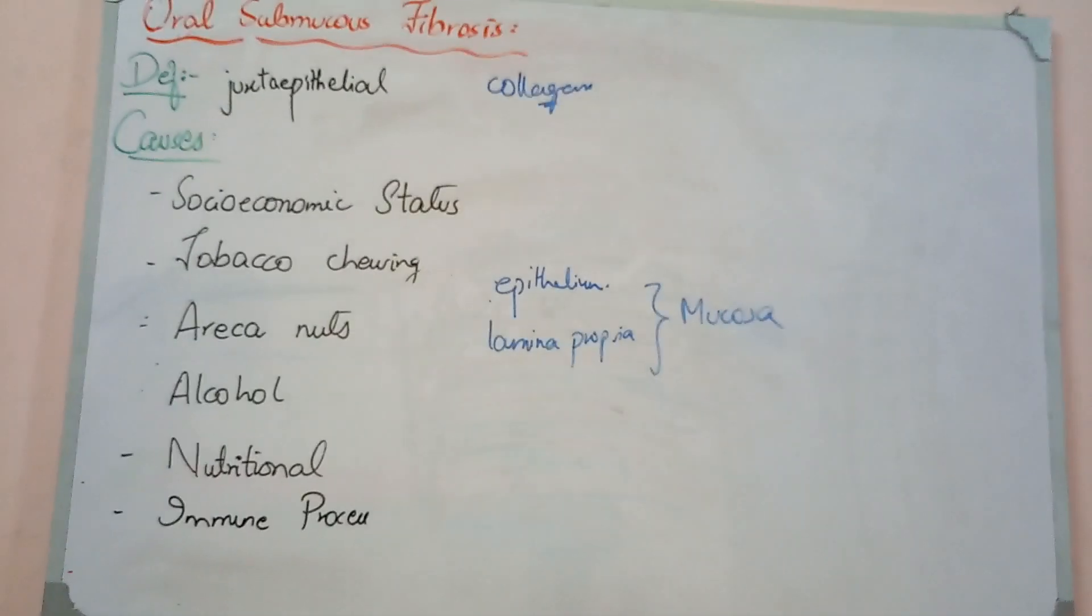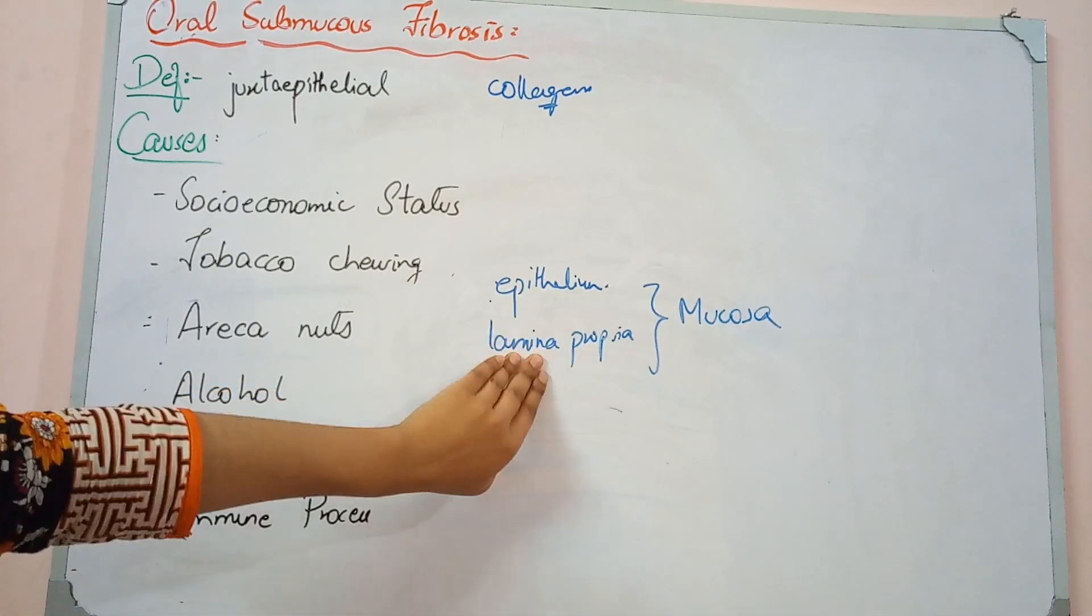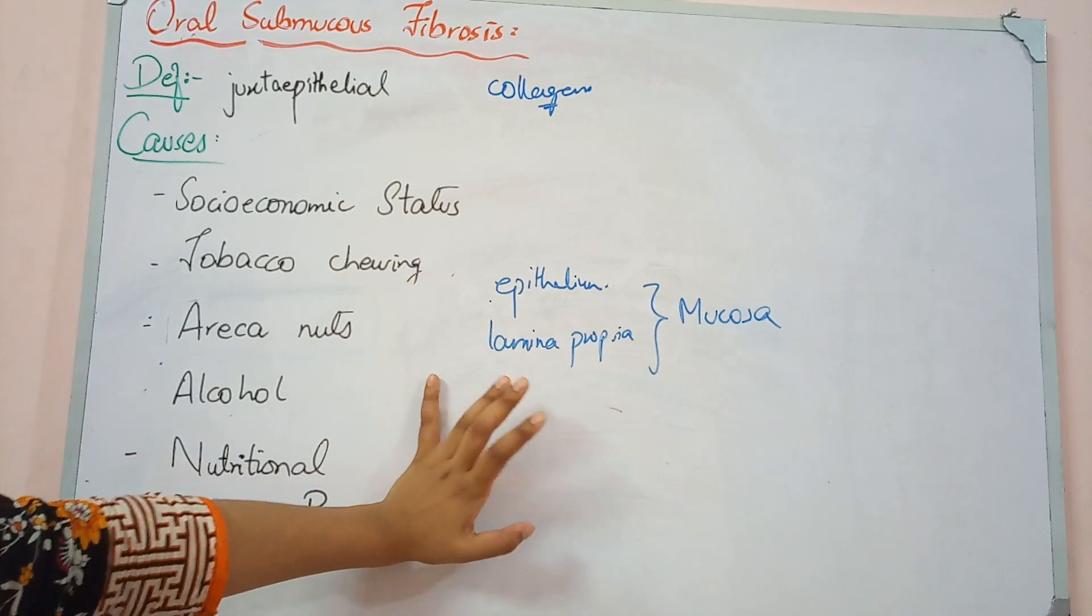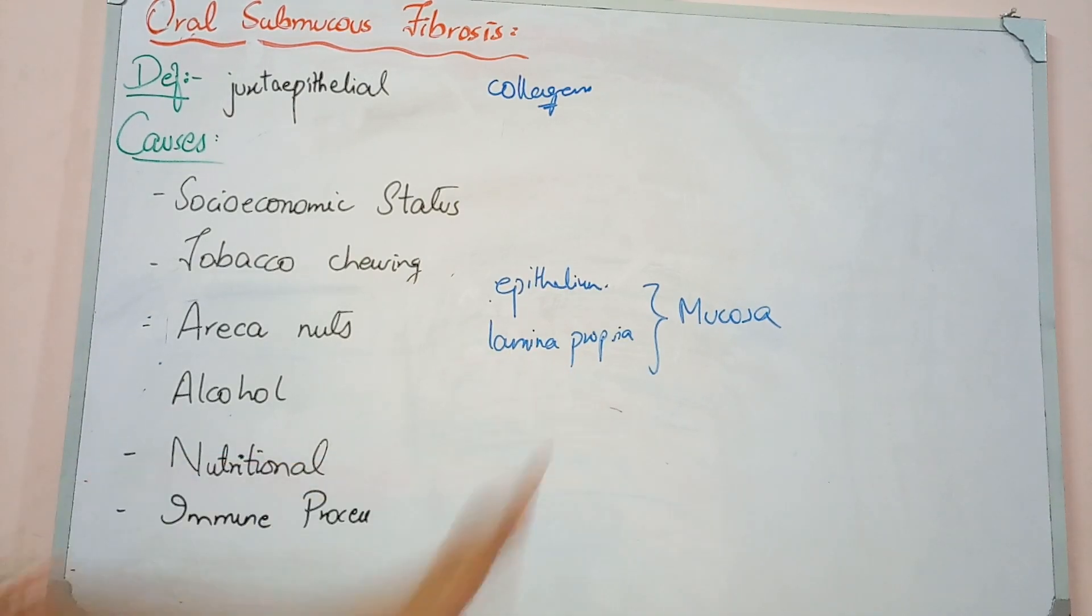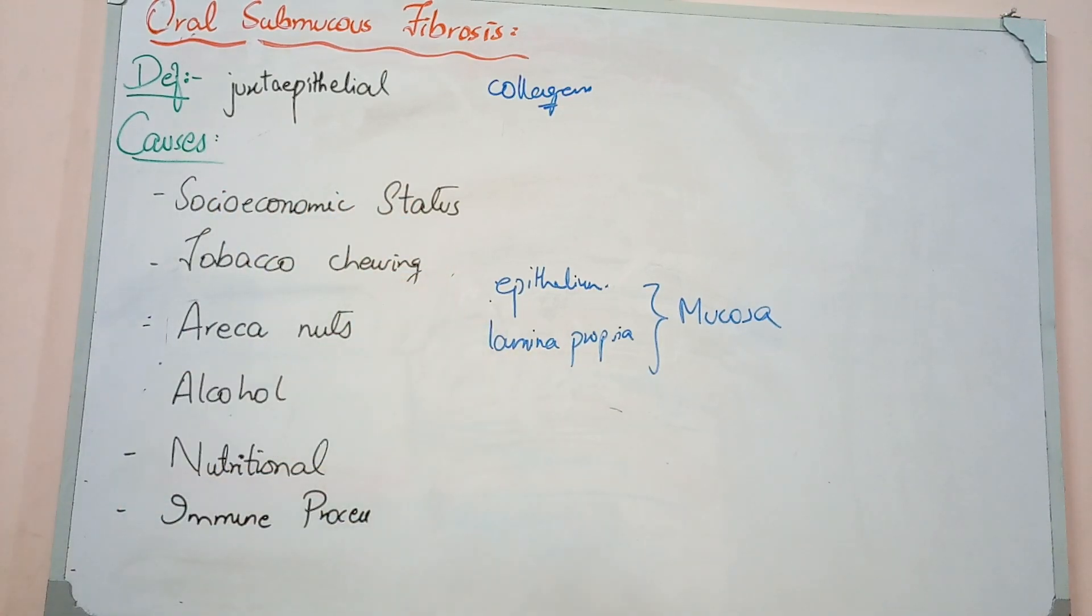The epithelium is stratified squamous. Lamina propria is connective tissue containing collagen fibers, elastic fibers, blood vessels, and extracellular matrix. The strength depends on its composition. More collagen fibers make it tough and rigid, while more elastic fibers make it elastic.